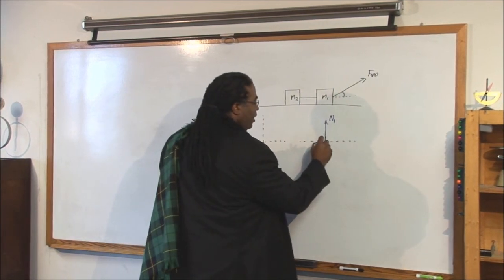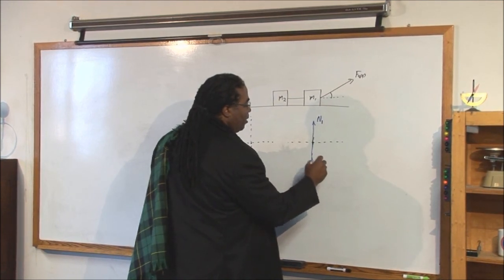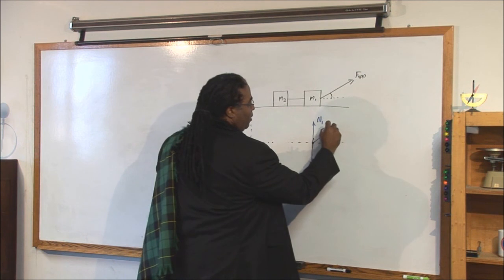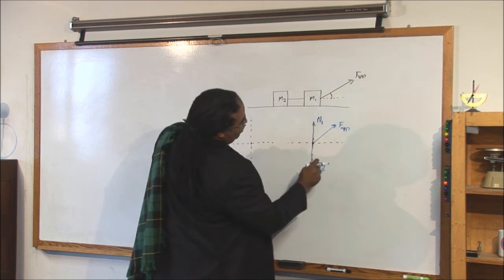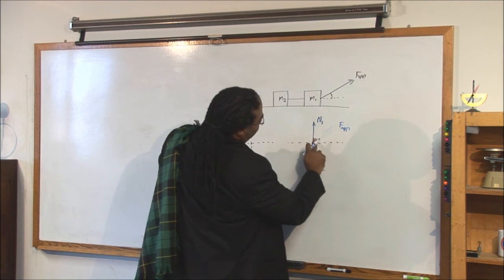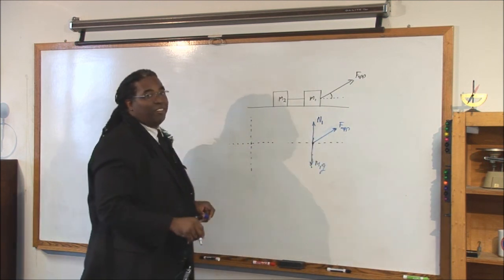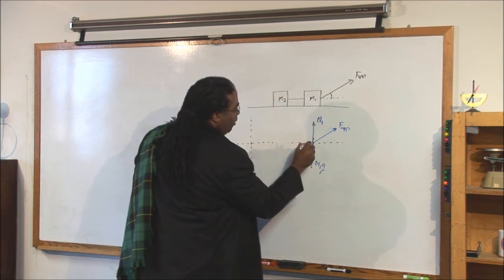Then we know that gravity is acting on it, because we said what's touching it plus gravity. We know that the applied force is touching it. Let's try to make those as parallel as possible. A good picture always helps you see a physics problem a little better. And then we know that there's a tension pulling on it.